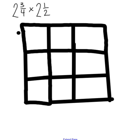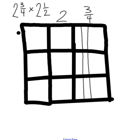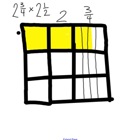This side represents two and three-fourths, so the column needs to be broken into fourths. Two whole boxes are highlighted and three-fourths of the last box. So two and three-fourths is represented. A box is drawn around the equation to separate it from the problem.